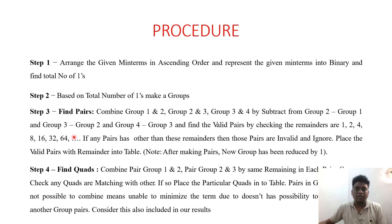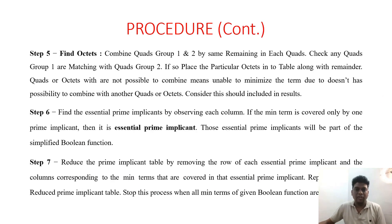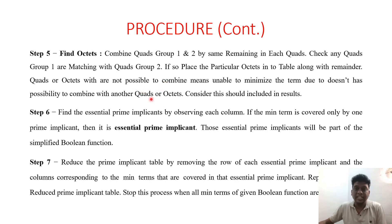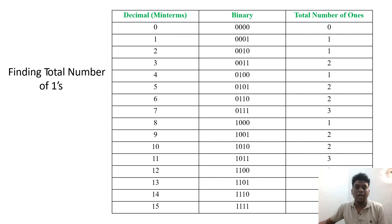Next, we find the quads by combining the pair groups between one and two, two and three, etc. Then we find the octets by combining the quad groups with the same remainders. Finally, we find the essential prime implicants in step 6, then reduce the prime implicants by removing the row of each essential prime implicant and the column corresponding to the minterms.